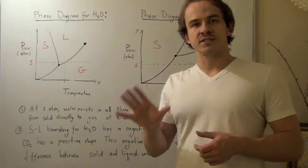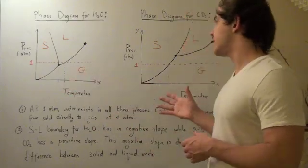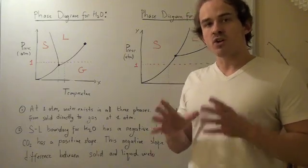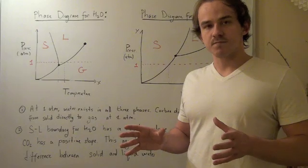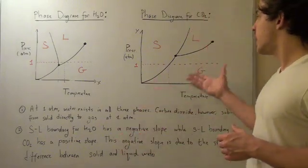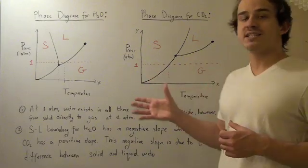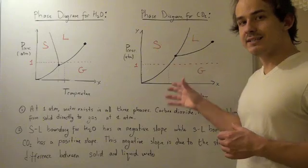Now two main differences exist between the two phase diagrams. First, at one atmospheric pressure, water exists in all three phases. However, for the carbon dioxide phase diagram, we see that carbon dioxide exists only in the solid phase and in the gas phase.